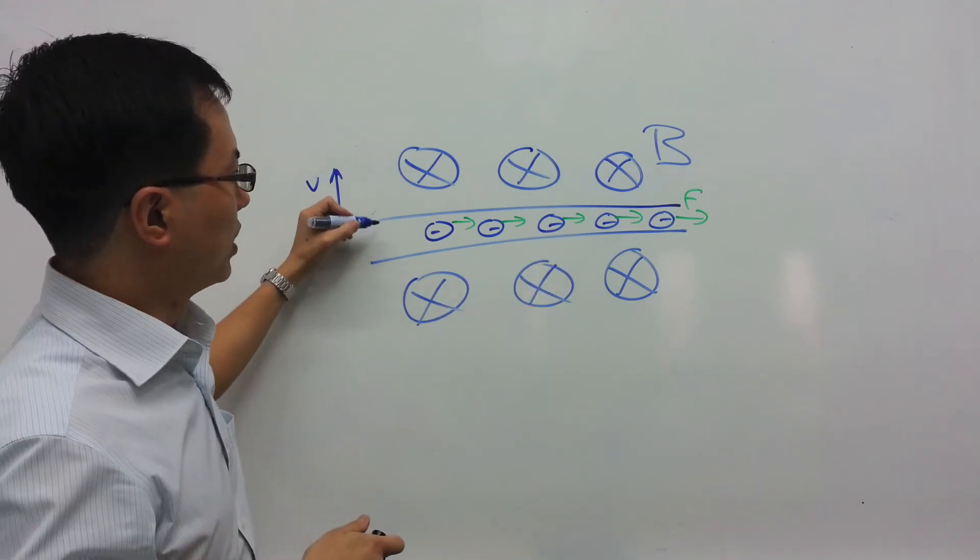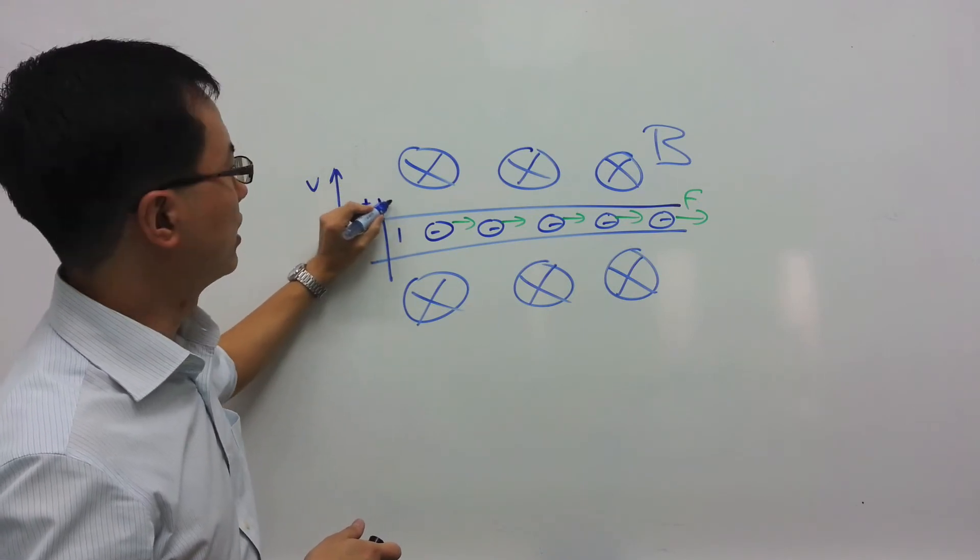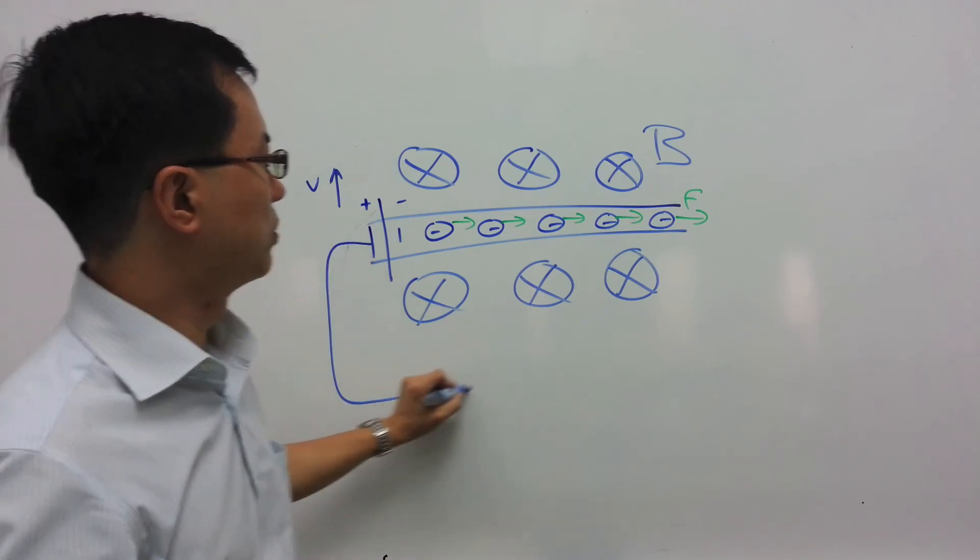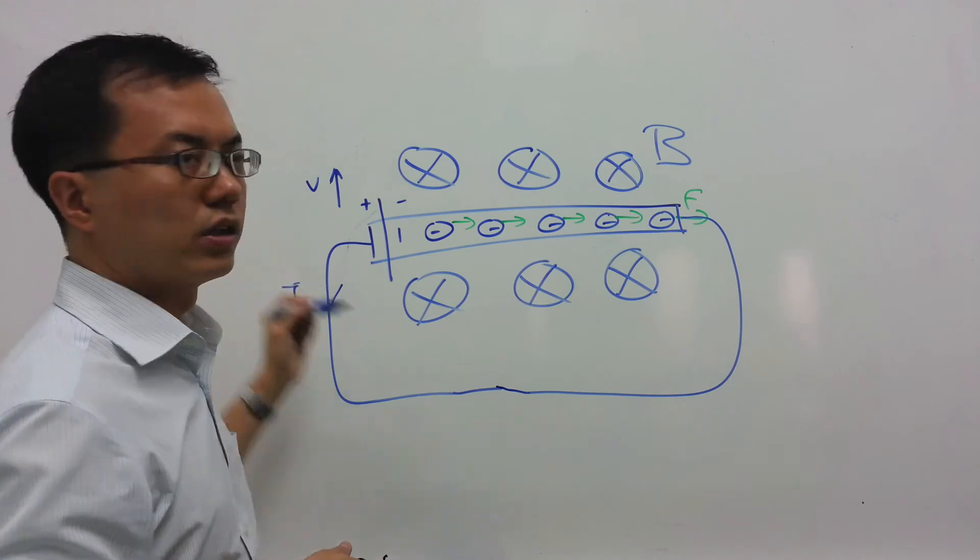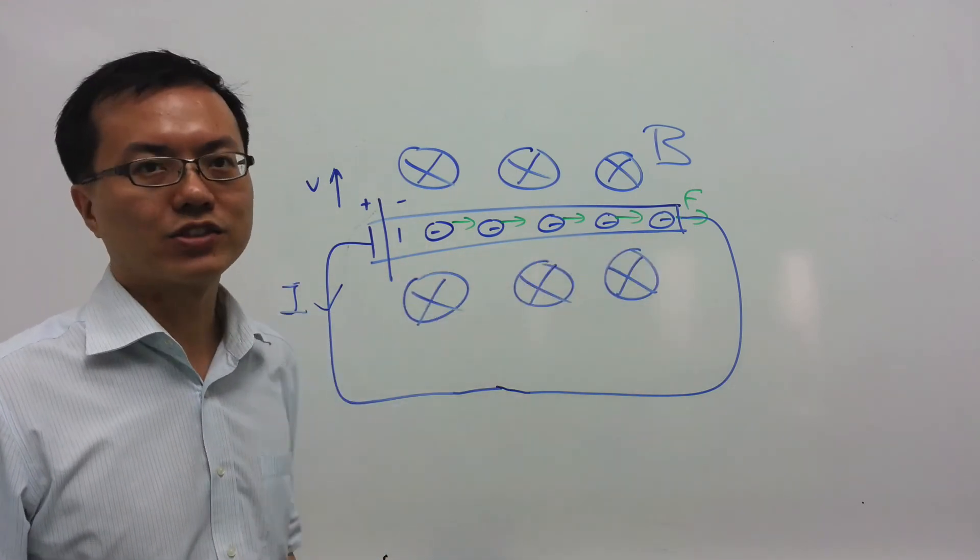So this EMF will be induced such that there is a positive polarity here and a negative pole here. If this was a closed loop, then you should have current flowing in this direction. And as you know, conventional current is opposite to the direction of the motion of electrons.